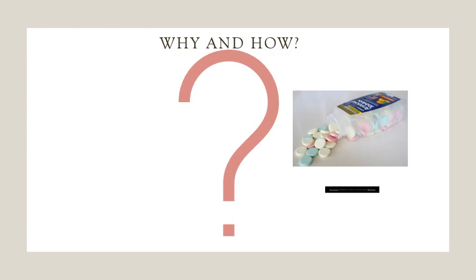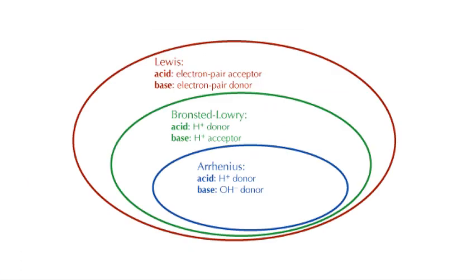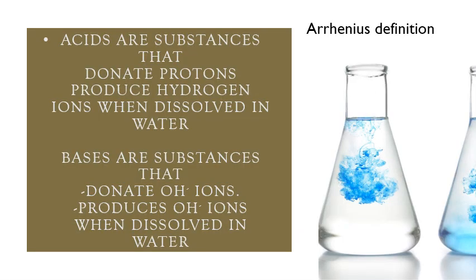So how can we identify an acid from its formula, or how can we identify it from its properties? Scientists came up with different definitions of acids and bases. We will have three definitions for acids and bases by three different scientists. The first one is by Arrhenius.